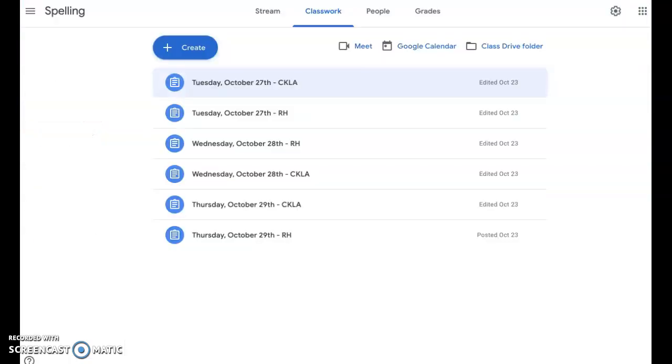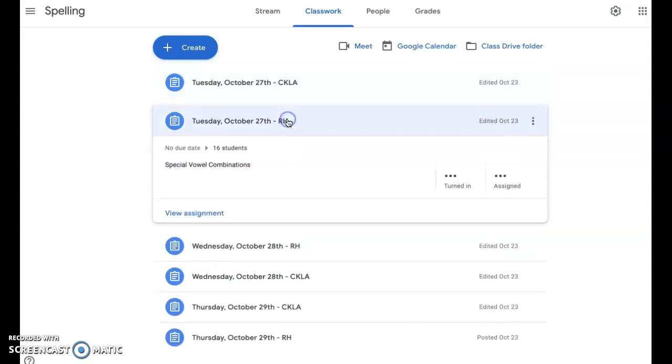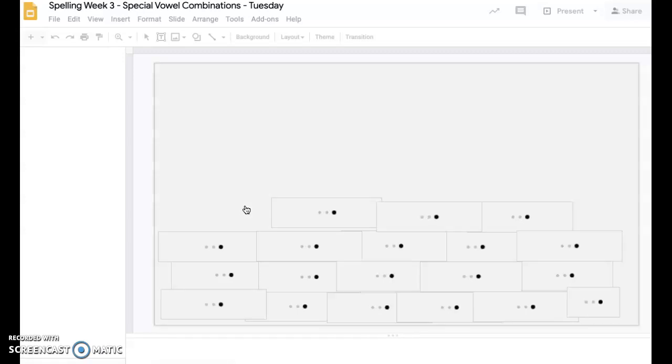Okay, it is Tuesday, October 27th and you have one on your screen that says R-H Tuesday, October 27th, R-H. That is the spelling that we're working on this week.